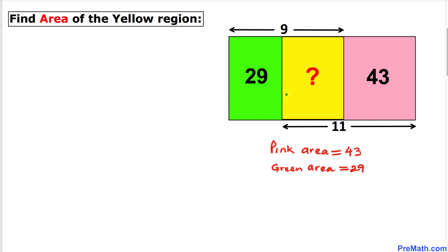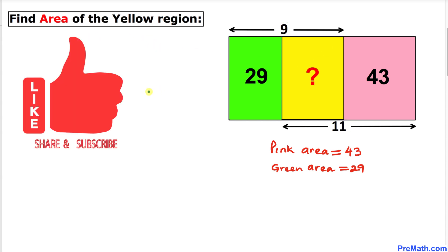Welcome to pre-math. In this video tutorial we have got this compound rectangle, as you can see in this figure, which consists of three individual rectangles. The area of this green rectangle is 29 square units, the area of this pink one is 43 square units. Moreover, this distance over here is 9 units and this distance is 11 units. We are going to find the area of this yellow rectangle.